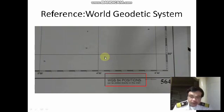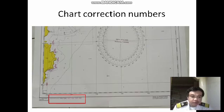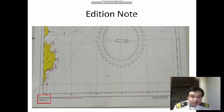Here we have the reference to the World Geodetic System 84. Next we have the chart correction numbers — these are manually written in magenta on the chart when corrections are made. On the side of the correction chart we also have the edition note.